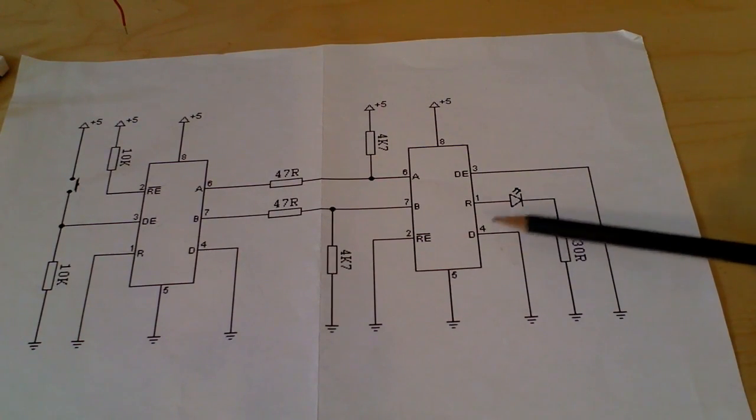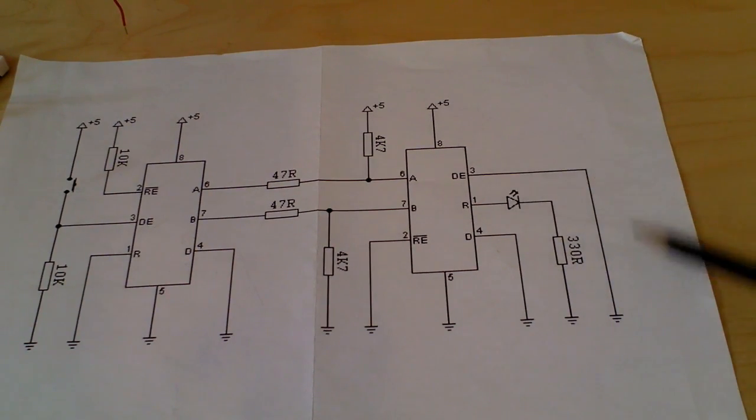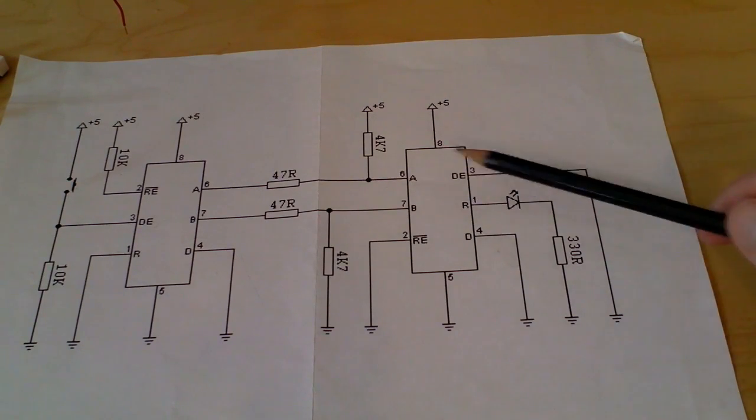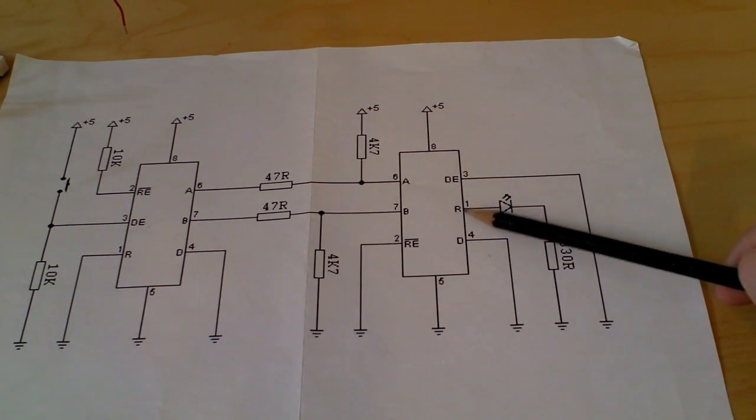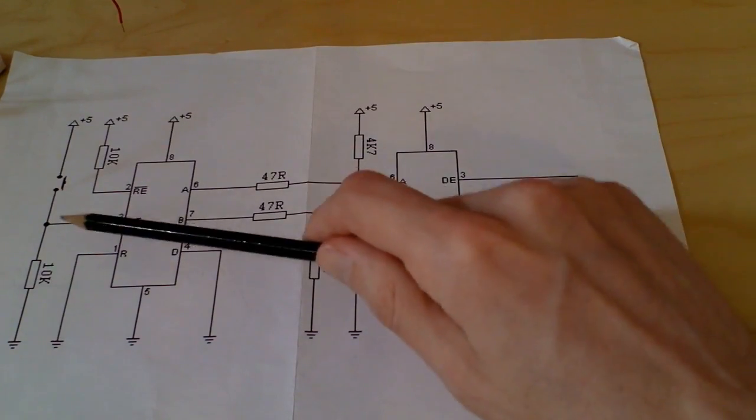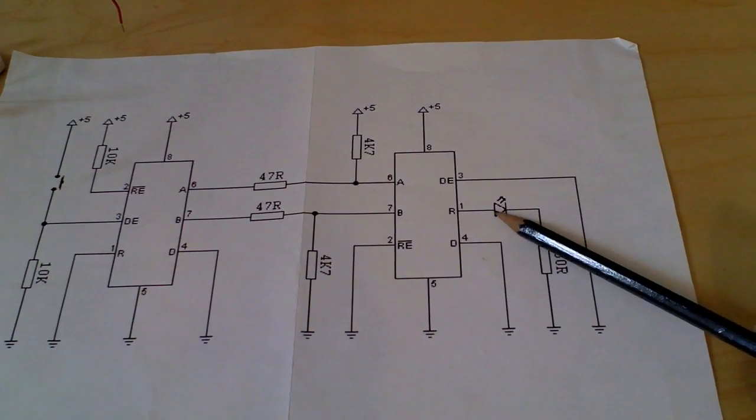The data line is pulled low because we're not actually using it because the data enable is also being pulled low. So there is nothing actually happening there. So when A is high, the LED lights because the receive will be passing through A1. When the switch is pushed, this line goes low, A goes low, so the LED extinguishes.